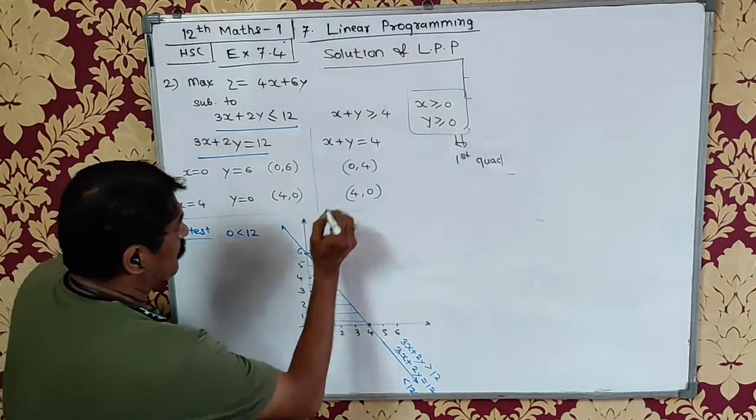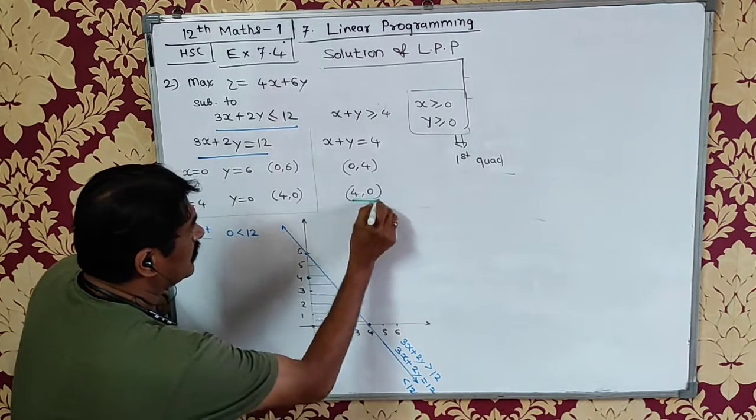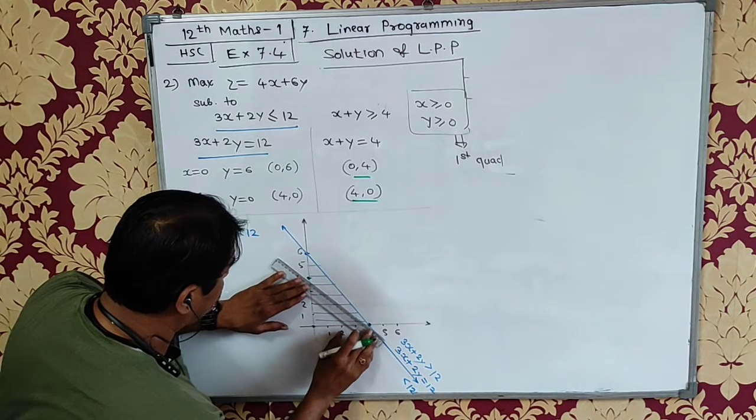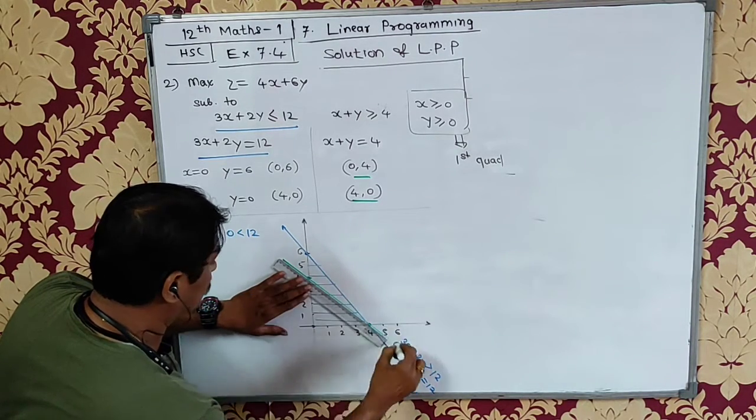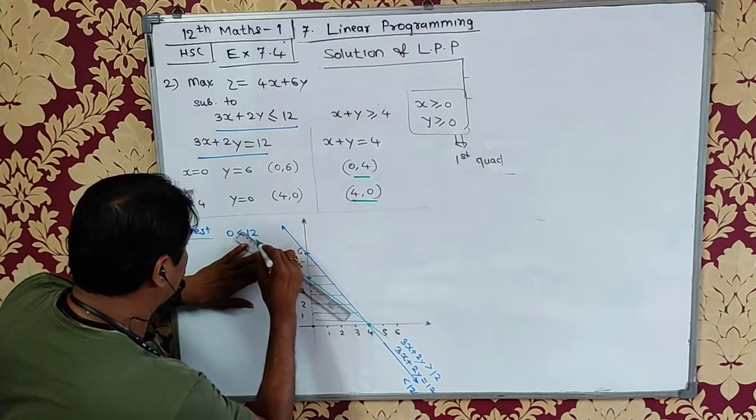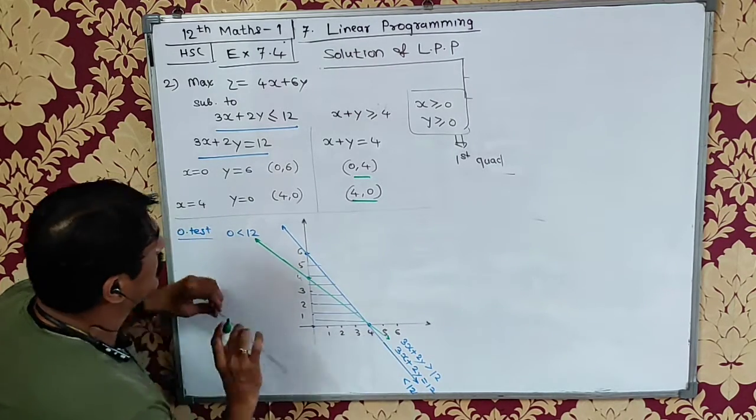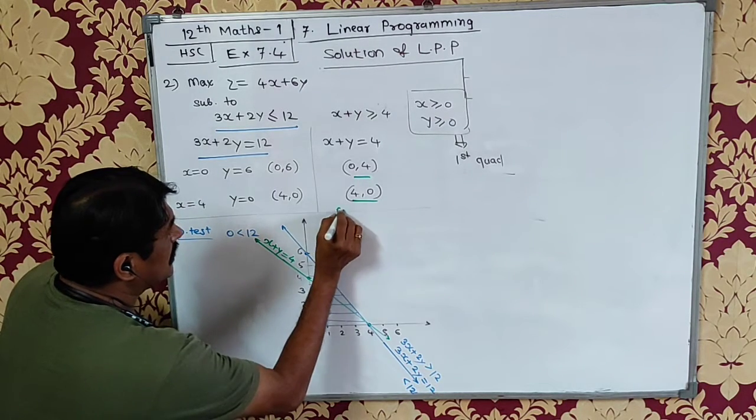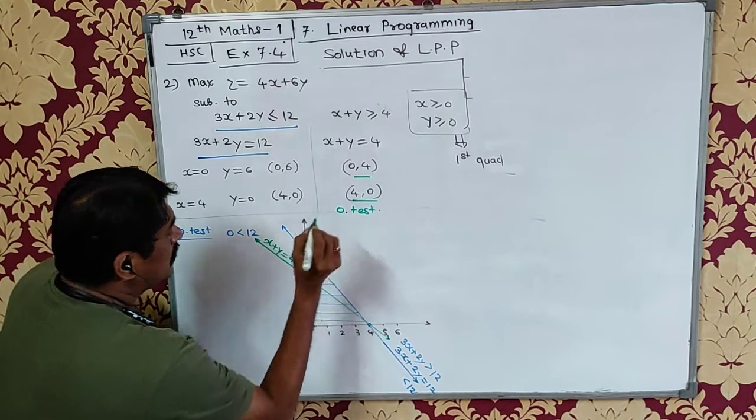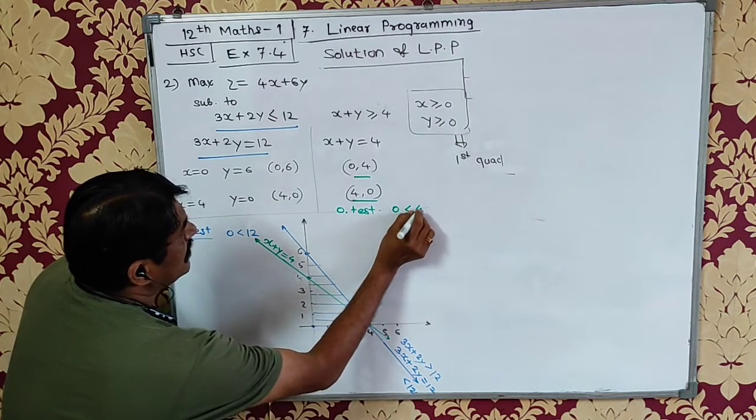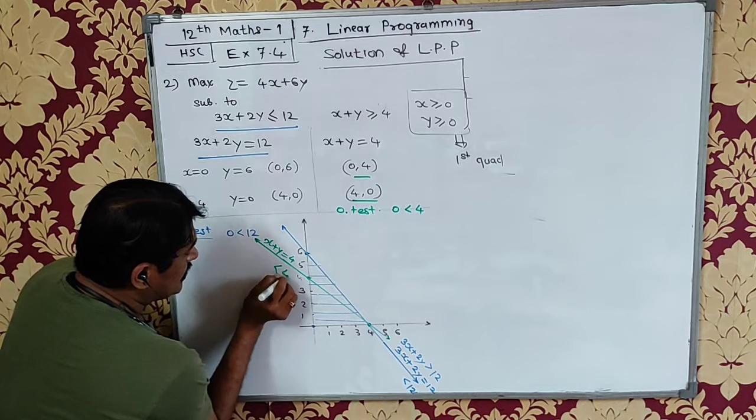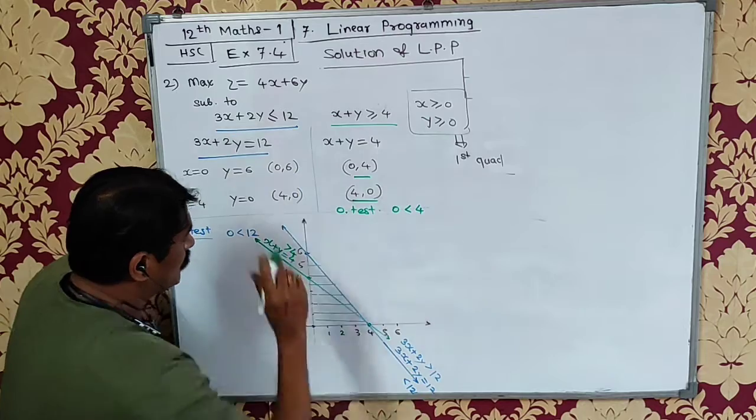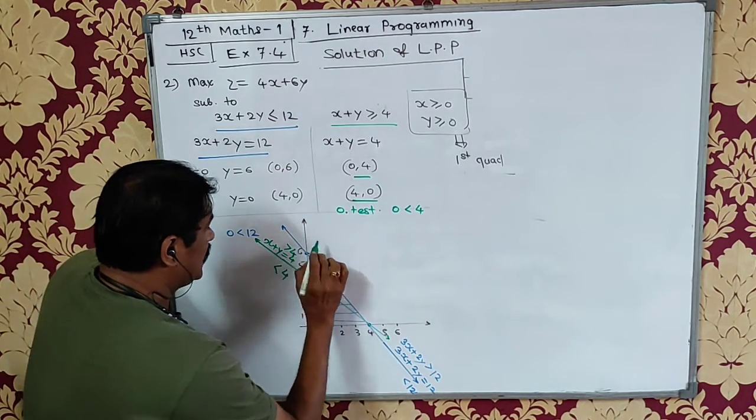Similarly, I will go for the second line. The equation is x plus y equals 4. Origin test: 0 plus 0 is 0, 0 is less than 4. So on the origin side, it is less than 4. And I want x plus y greater than or equal to 4, so that means outside this line, on the line and outside the line.